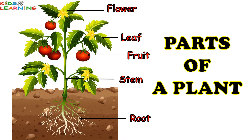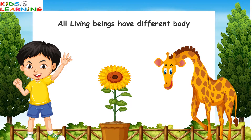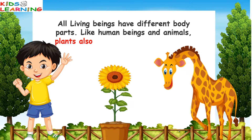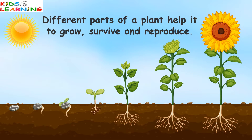Parts of a Plant. All living beings have different body parts. Like human beings and animals, plants also have different body parts. Different parts of a plant help it to grow, survive and reproduce.